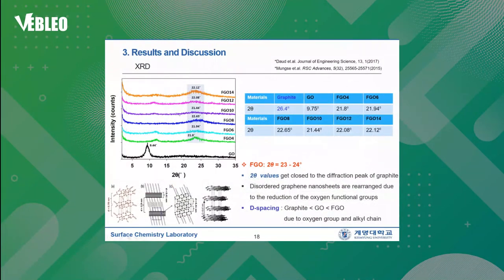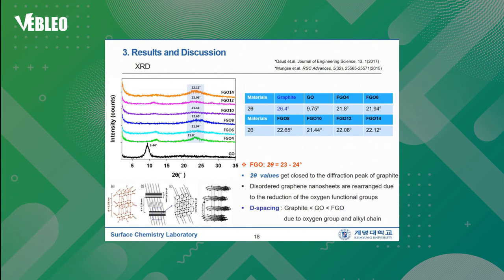These are the XRD patterns taken for GO and FCO samples. You can see the characteristic peaks at two-theta values from 23.2 to 23.8 degrees for FCO samples. These two-theta values are close to the diffraction peak of graphite, meaning these graphene nanosheets are rearranged due to reduction of oxygen functional groups. As you can see in this table, the d-spacing values are increased in the order of graphite, graphite oxide, and functionalized graphene oxide, due to the oxygen groups of graphite oxide and alkyl chains attached to the FCO samples.